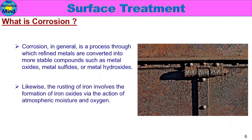Likewise, the rusting of iron involves the formation of iron oxides via the action of atmospheric moisture and oxygen. If we look at an iron product, it will rust. When exposed to atmospheric air and oxygen, it reacts to form iron oxide — it rusts and converts. To prevent corrosion, the surface of the product is protected by coating or painting.